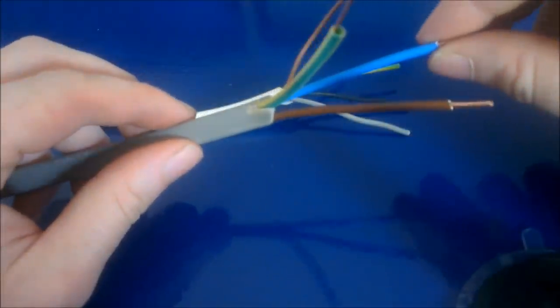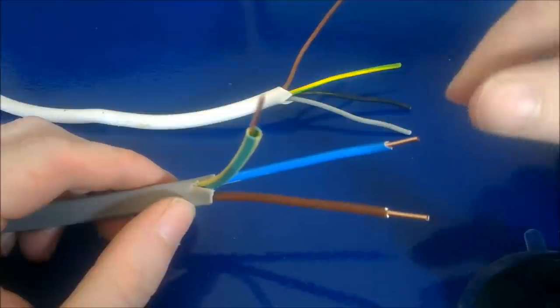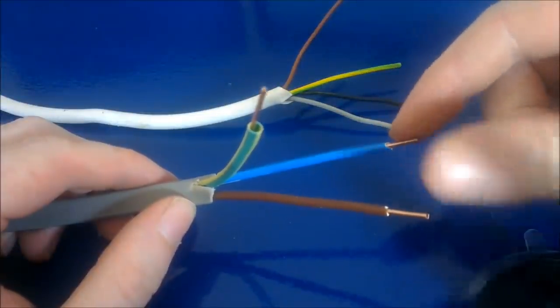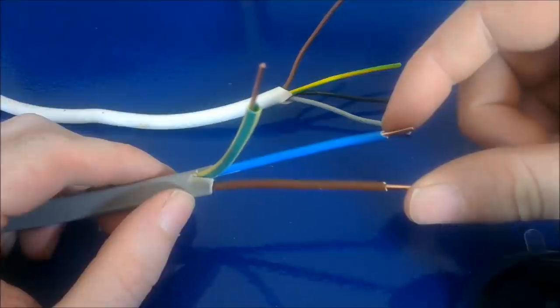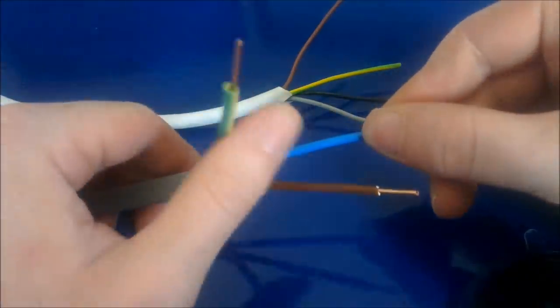If you're talking about a single phase electrical installation, the black wire is more than likely your neutral. As I've explained before, brown is your live and blue is your neutral and then your earth.